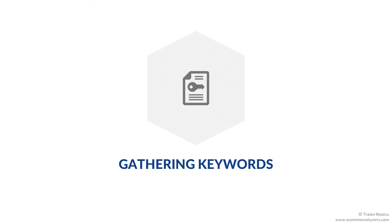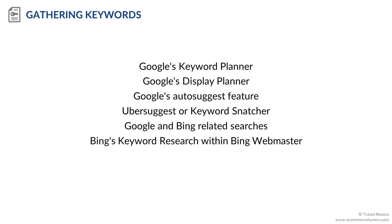Let's see how you can gather keywords. Collecting the initial set of keywords is straightforward, but the number of potential sources is overwhelming. You can use Google's Keyword Planner, Google's Display Planner, Google's Autosuggest feature, Google and Bing-related searches, and Bing's Keyword Research feature within Bing Webmaster.